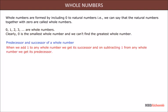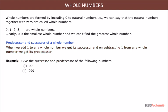When we add one to any whole number we get its successor, and on subtracting one from any whole number we get its predecessor. Example: give the successor and predecessor of the following numbers — 99 and 299.